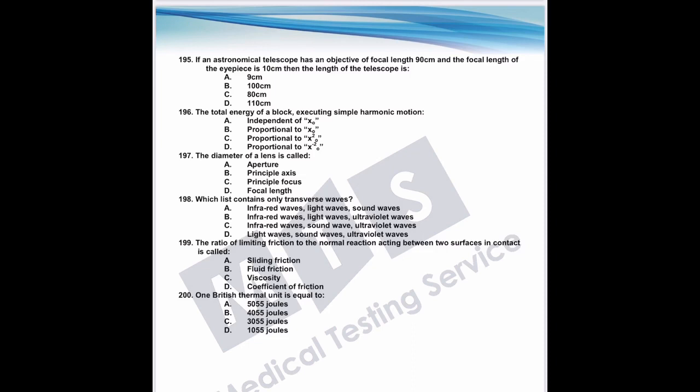Question 196: total energy of a block executing simple harmonic motion. Total energy = ½kx₀². Total energy is directly proportional to amplitude squared. The correct answer is C.